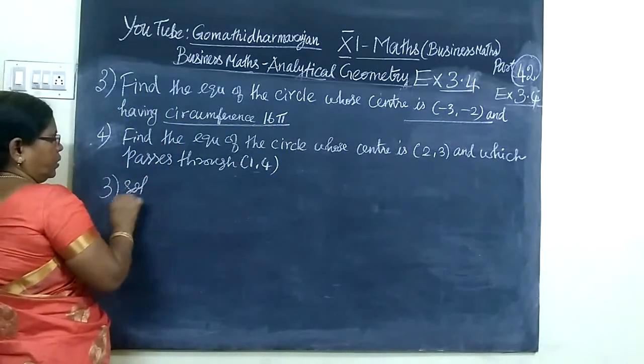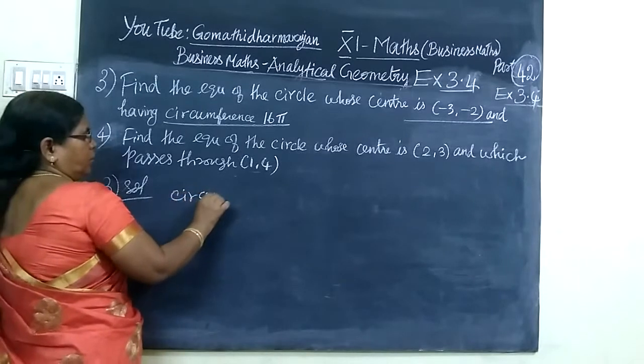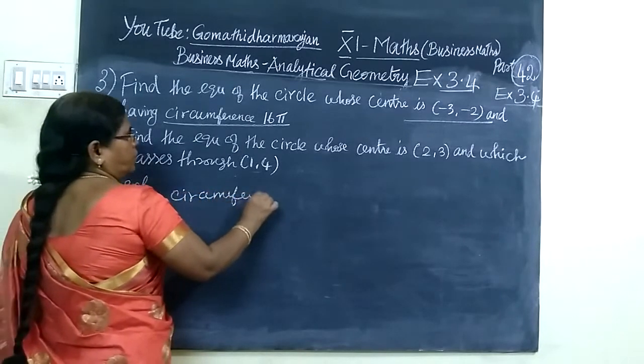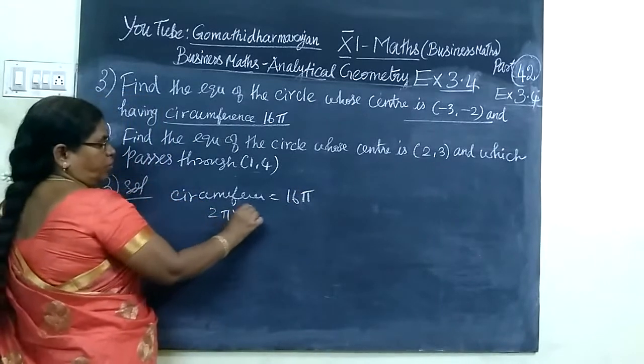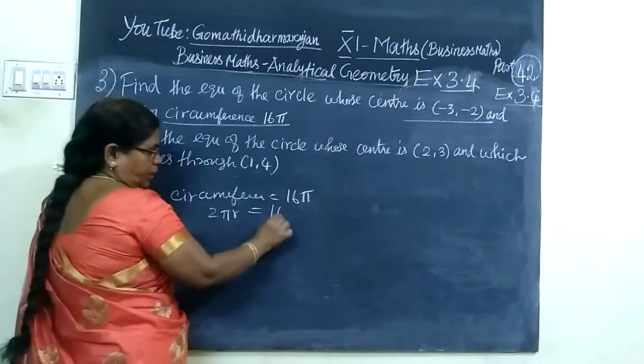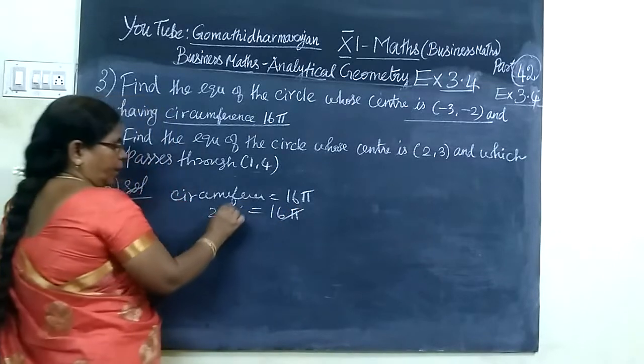You know circumference equals 2πr. Here your given circumference is 16π. So 2πr equals 16π, and we solve for r.